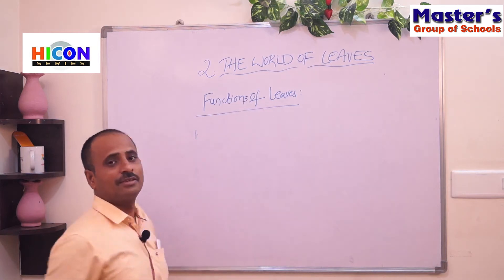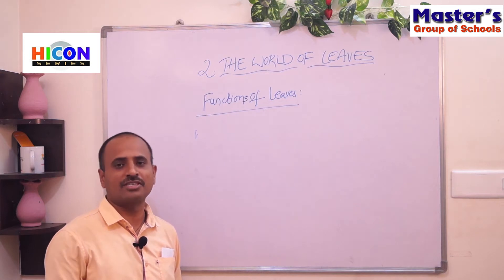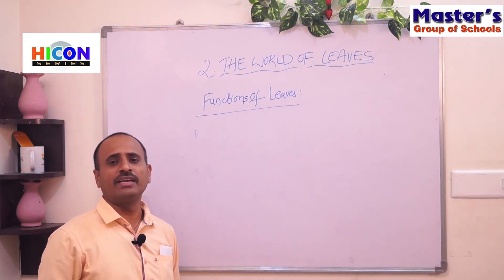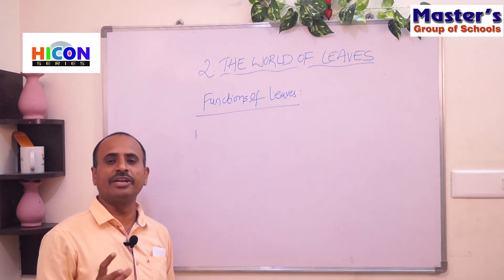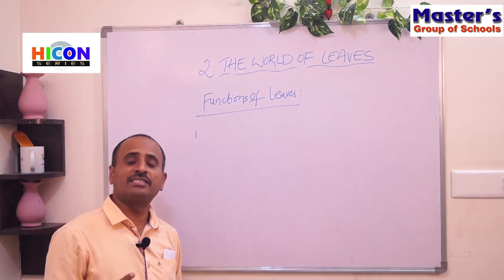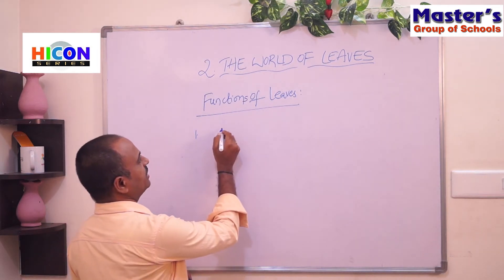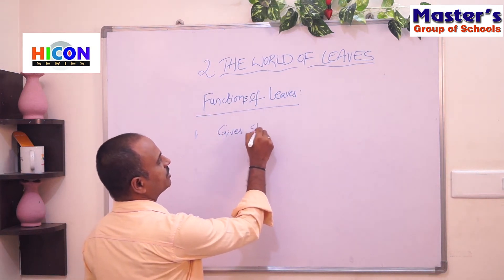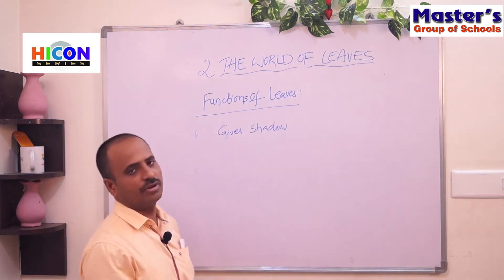The first function: plants give shadow during hot summer days and cool the environment. For example, trees like the banyan tree, mango tree, and neem tree give extensive shadow during hot summer days. So the first function of leaves is giving shadow and cooling the environment.